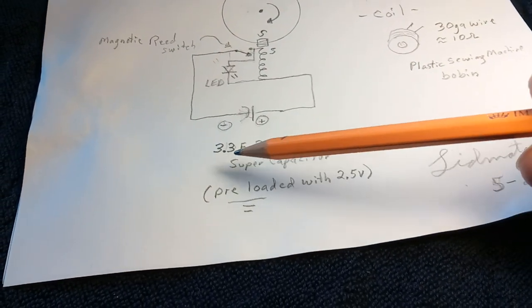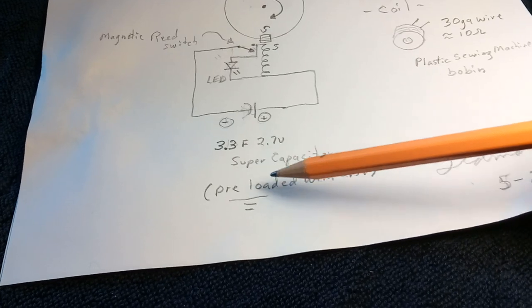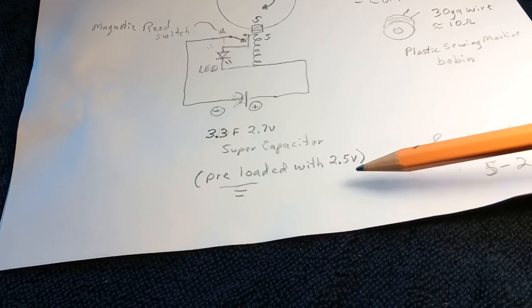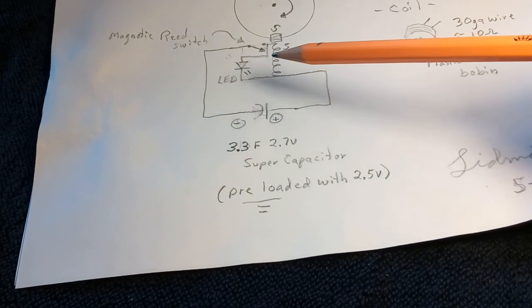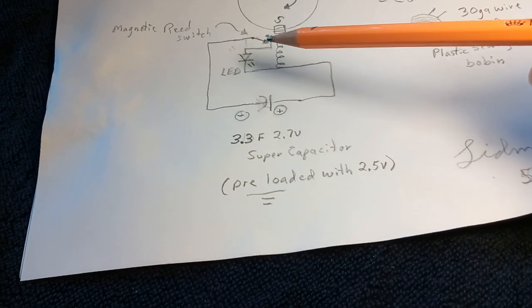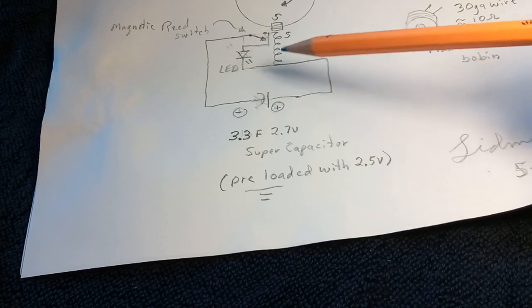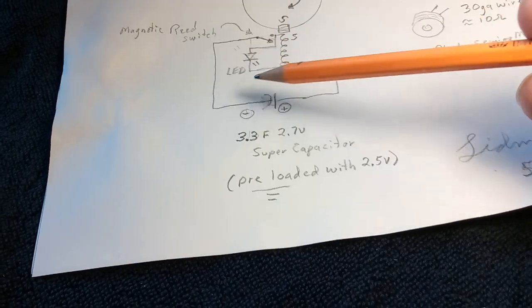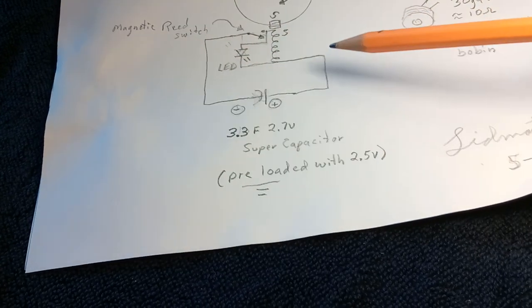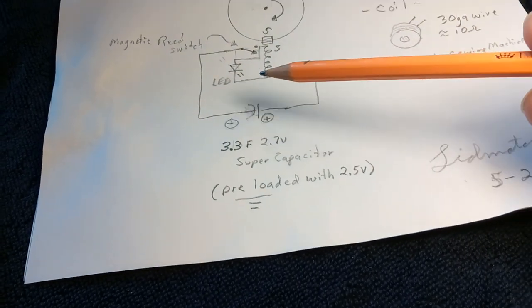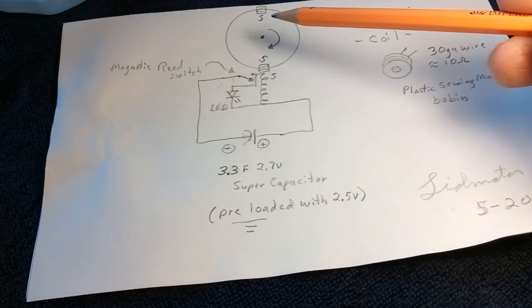I am running this on a 2.7 volt, 3.3 farad super capacitor, preloaded with about two and a half volts. The way the LED operates is when the switch opens up, the energy that was in the coil comes backwards like this, or some people say it goes forward. So that's how the reed switch operates.